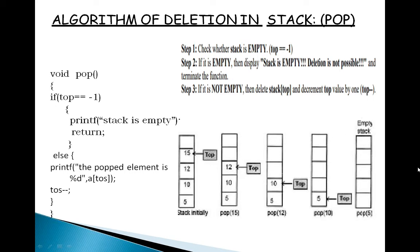As shown in the diagram: initially top is pointing to the last element of the stack. When you perform the pop operation you take element 15 out of the stack, then decrement the top value by 1 — now top is pointing to 12. Next, taking 12 out of the stack decrements top by 1 again, and now it points to 10, and so on.